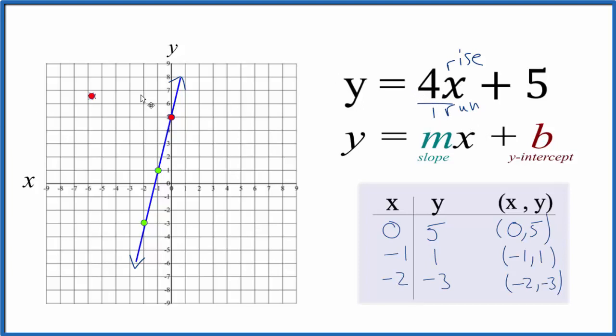But now we can go to that y-intercept, go up 4, 1, 2, 3, 4, and over 1. And you can see that would be on our graph.